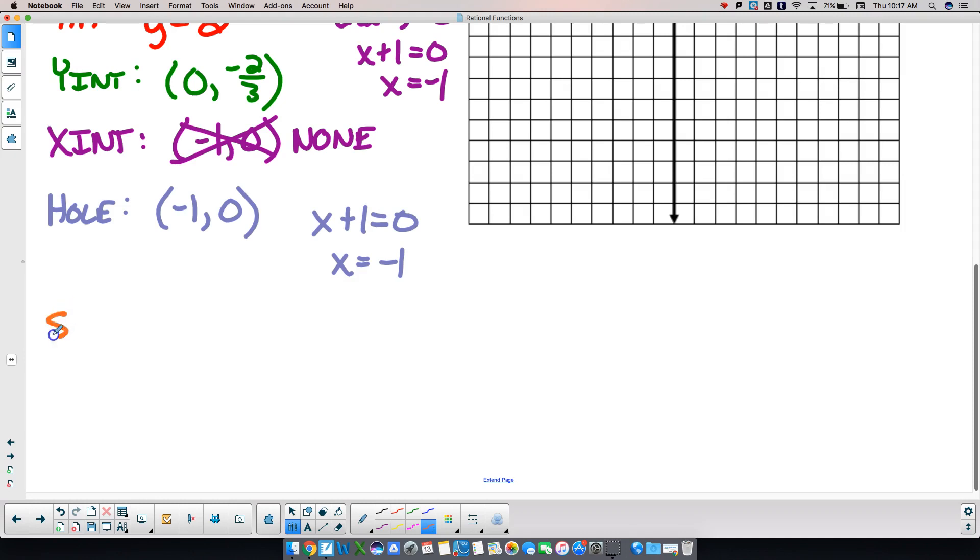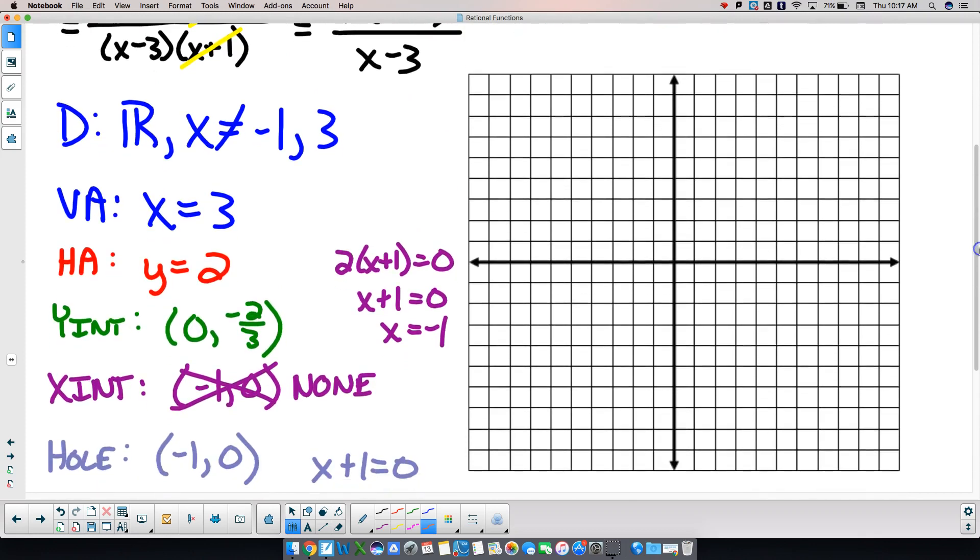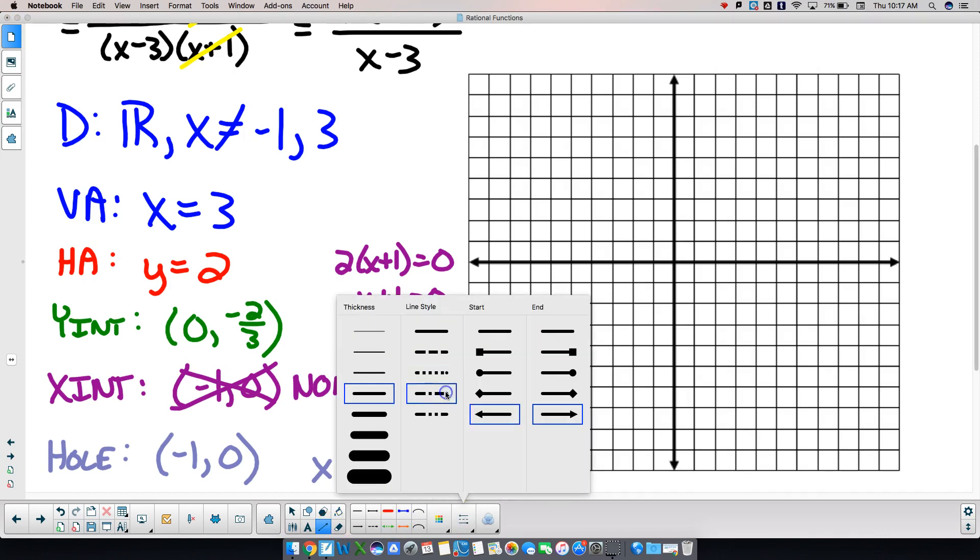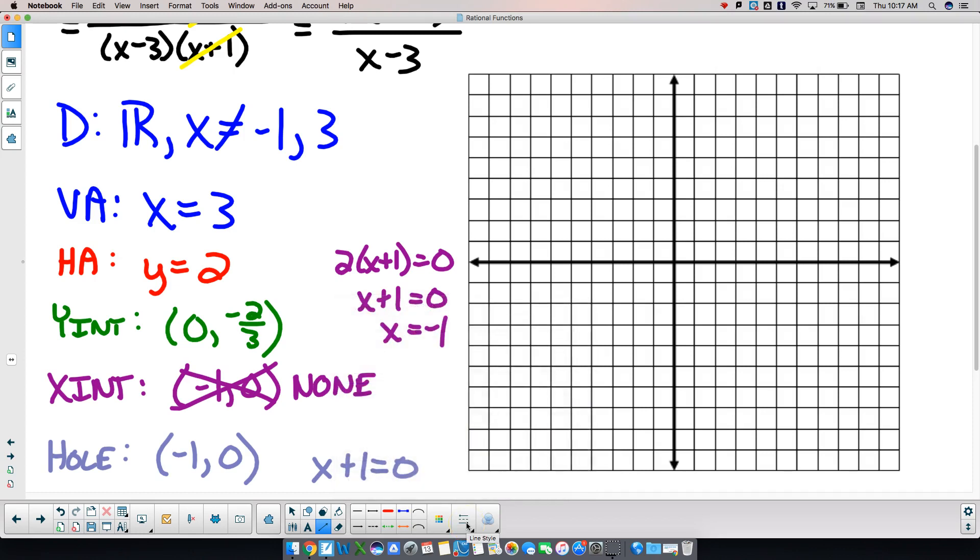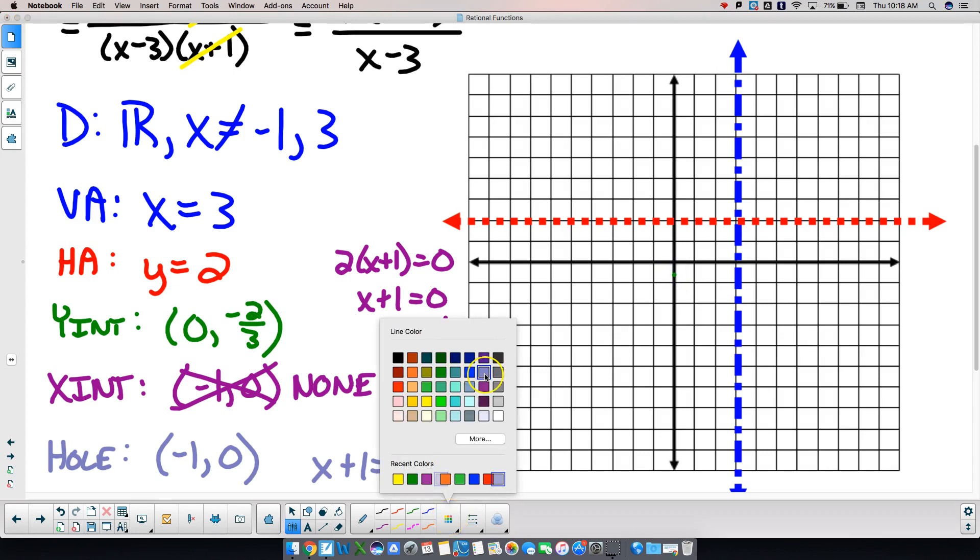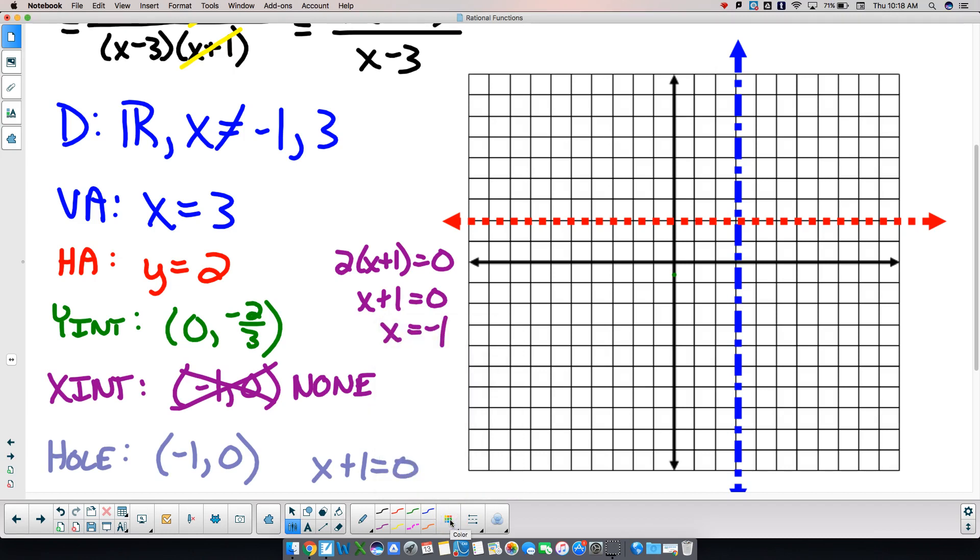Slant asymptote, do I have a slant asymptote? Nope, no slant on this one, because the degrees were the same. 1 over 1. So we've got x equals 3 here is my vertical, y equals 2 is my horizontal, 0 comma negative 2 thirds is my y-intercept. My x-intercept went away. My hole then became negative 1 comma 0.